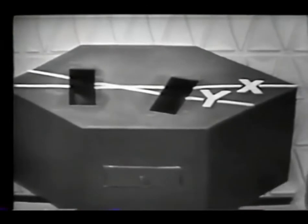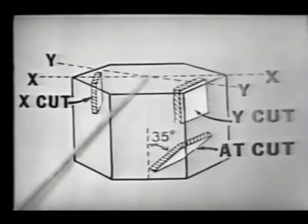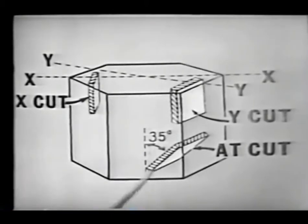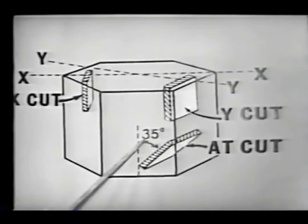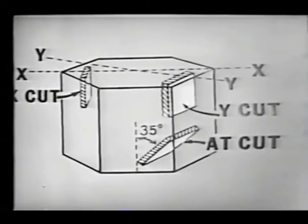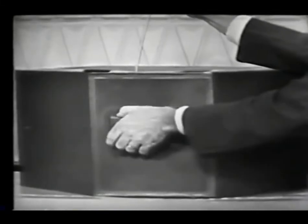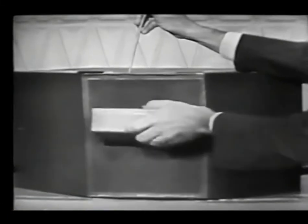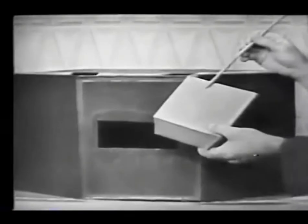For the third and final cut, we're going to cut at an angle from the Z-axis. Recall, the Z-axis passes through the center of the crystal from end to end. For this cut, we'll cut at a 35-degree angle from the Z-axis. The crystal cut is made right into the face of the crystal. We call this cut an AT-cut — an AT-cut crystal.